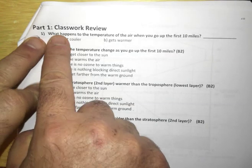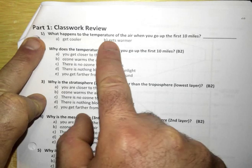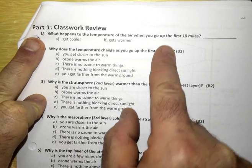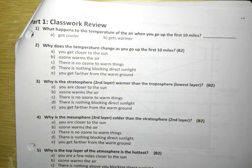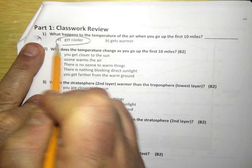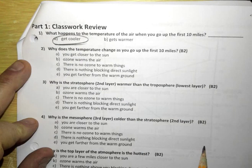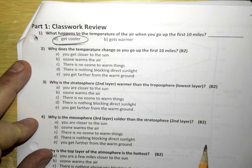Day 107 classwork review. What happens to the temperature of the air when you go up the first 10 miles? What happens, what do you think? Go ahead James. It gets colder, that's right. Temperature drops about 80 degrees from the surface to the top of the troposphere.